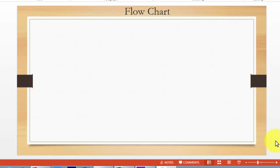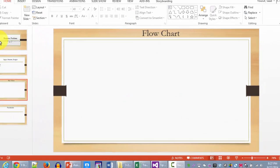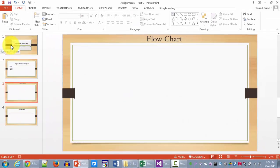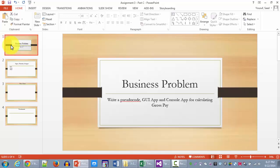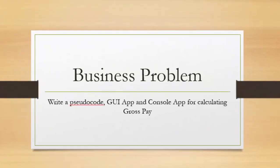Hello and welcome to another intro to programming tutorial. In this tutorial we are going to be solving the following business problem that is basically from your assignment. We are going to be writing a pseudocode, drawing a flowchart, and writing a GUI app and a console app for calculating gross pay for an hourly employee.